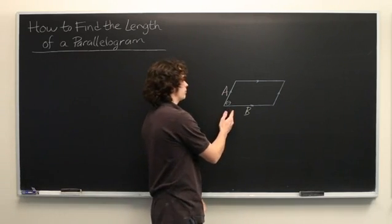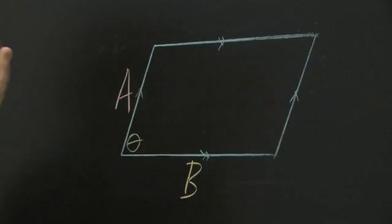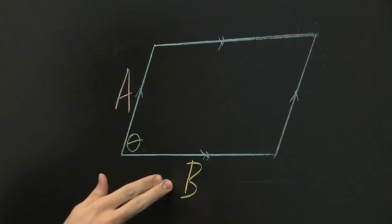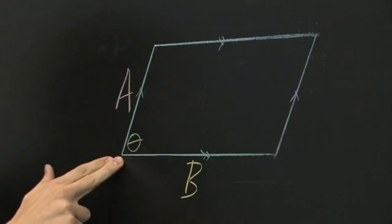So here we have some parallelogram where we know this side is of length a, where a is any number, this side is of length b, and we know an angle theta.